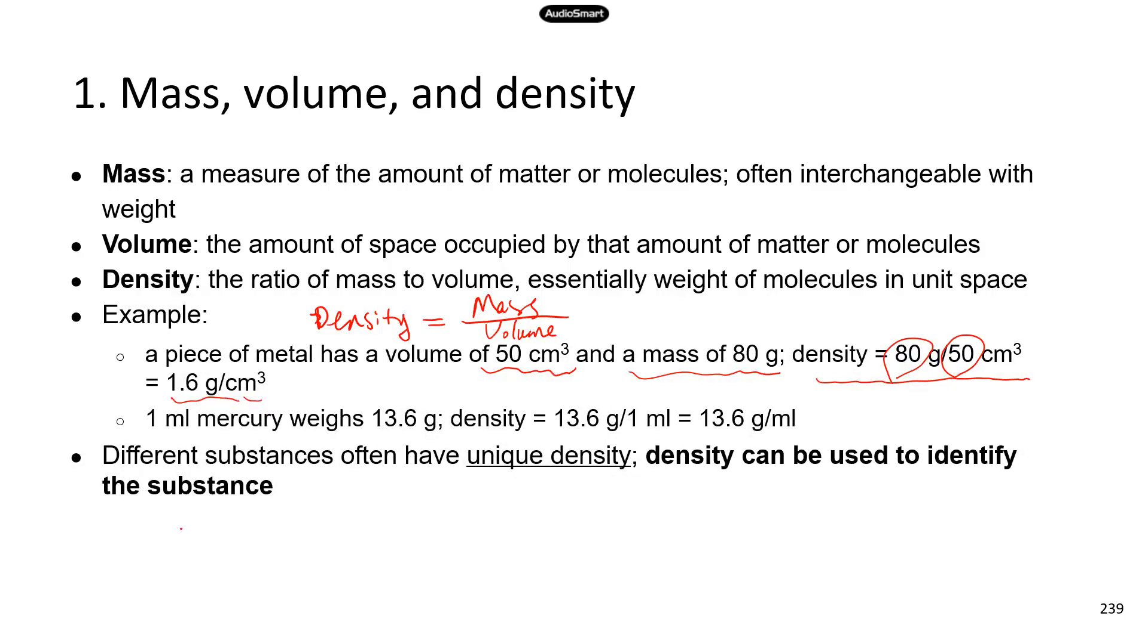Second example is about mercury. One mil mercury weighs 13.6 grams. So the density is going to be the mass divided by volume. And in this case, it's not solid, it's almost like a liquid. So that's why it's in milliliter, which is mil. So the density is 13.6 grams per mil.